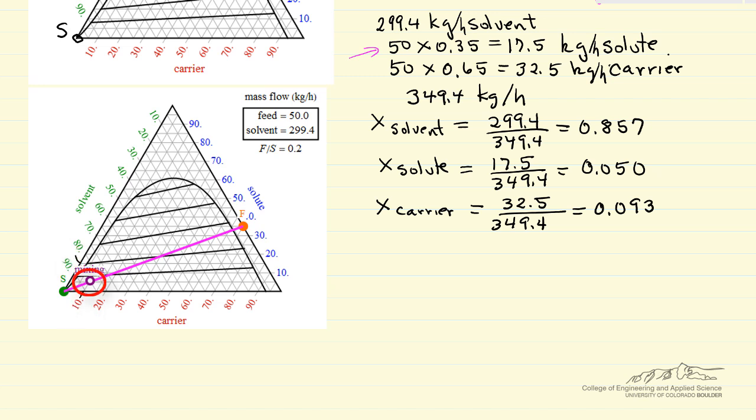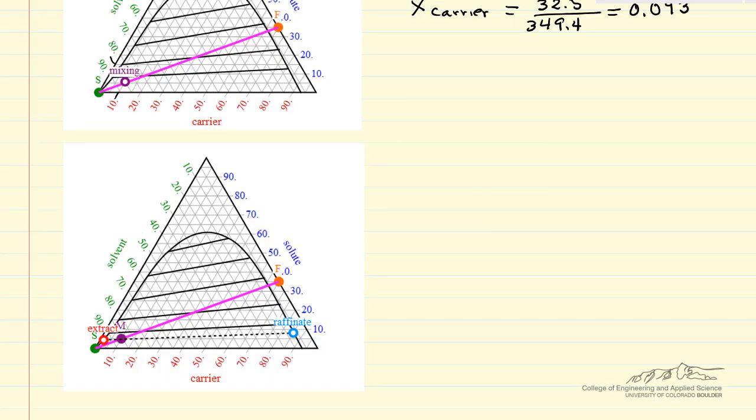So once I have the overall composition, I can say what two compositions are in equilibrium if we have a point located at the mixing point, so what we want to do is draw a tie line. So in the phase diagram, I've indicated the tie line that's connecting two equilibrium phases, the extract, which is solvent-rich, and the raffinate, which is carrier-rich. And then I can read the values off the diagram.